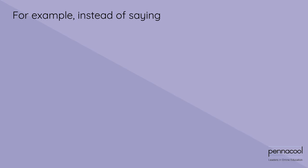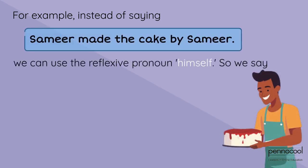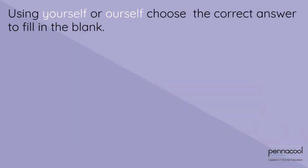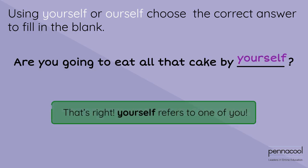For example, instead of saying Samir made the cake by Samir, we can use the reflexive pronoun himself. So we say, Samir made the cake by himself. Using yourself or ourself, choose the correct answer to fill in the blanks: Are you going to eat all that cake by yourself? That's right — yourself refers to one of you.